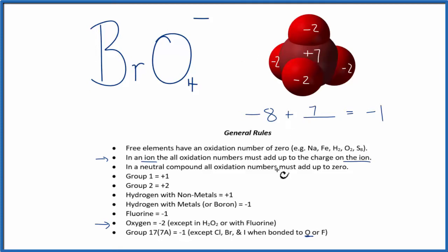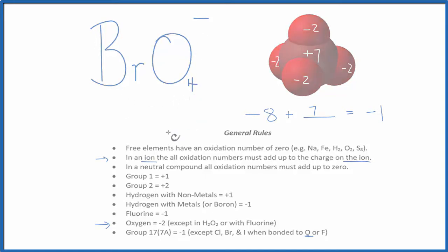So to recap, we found the oxidation numbers for the ones that we knew, and then to find the bromine, because it doesn't follow the rule for group 17, we used the oxidation numbers on the one we knew, and the charge on the ion, to get the oxidation number on the bromine. This is Dr. B with the oxidation numbers for BrO4 minus the perbromate ion. Thanks for watching.